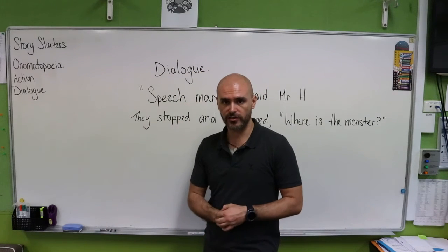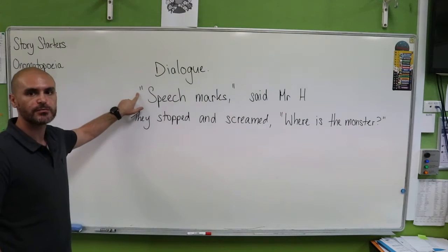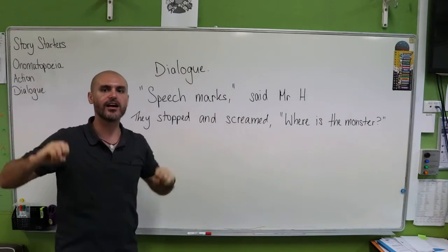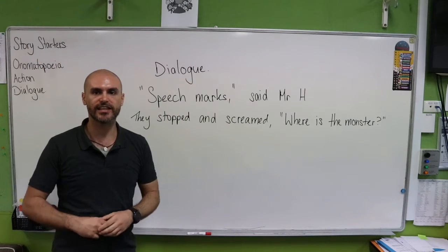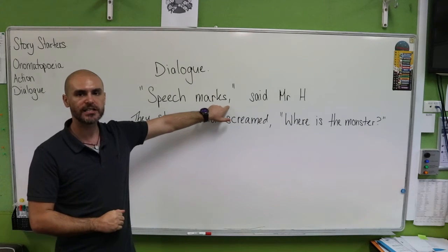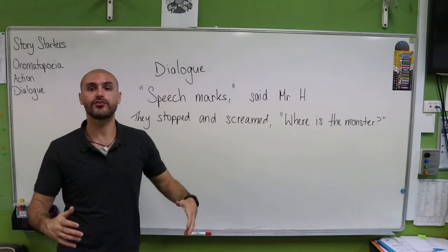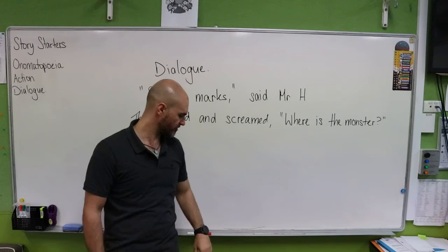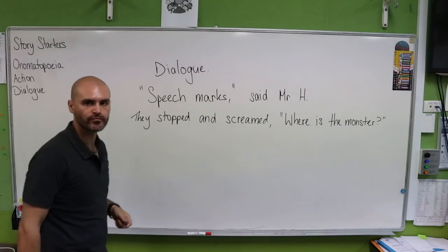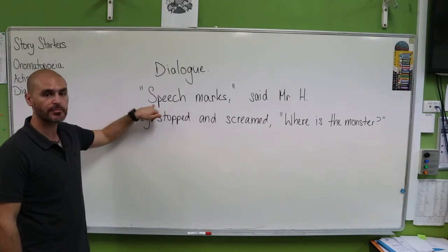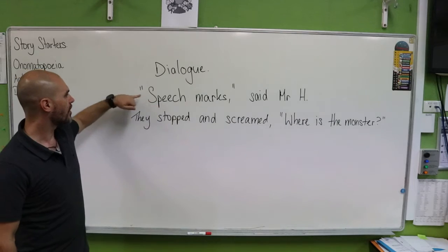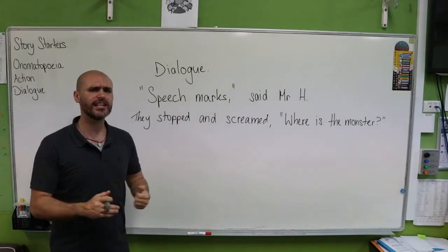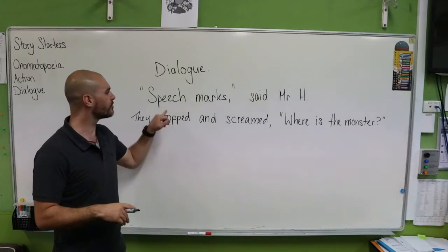The one tricky part with dialogue comes in our punctuation. We use speech marks — two lines at the start and two lines at the end, sitting just above what we're saying — to show readers that these things are being said by our characters. Before our speech marks end, we need a comma to show that this is the end of what's being said. I should have added a full stop at the end to show that this is a complete sentence. I've started with a capital letter inside my speech marks. I would suggest writing this down so that you have something to look back at to remind you of the proper way to use speech marks.